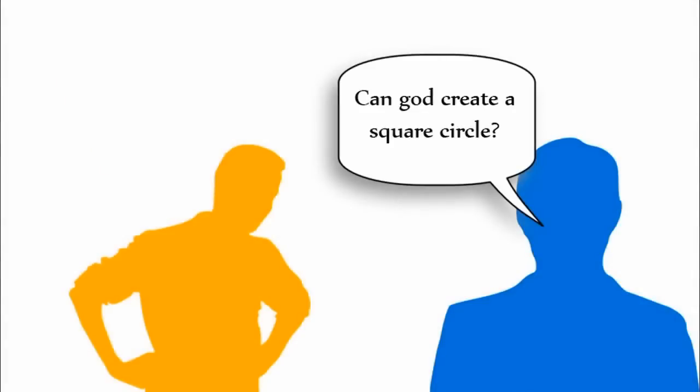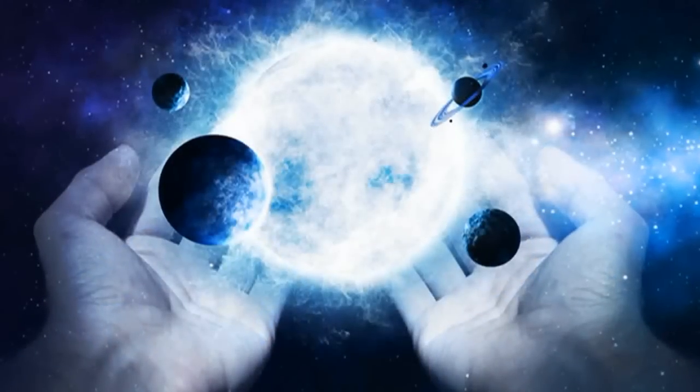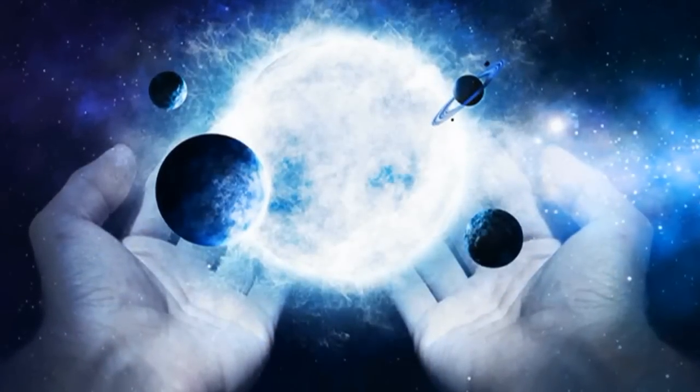For example, try asking a believer if God can create a square circle. This question puts them in a difficult position. If God is omnipotent, meaning all-powerful, then God should be able to do anything.